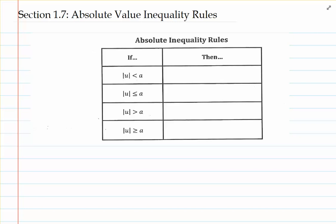If we look at the first row, this is saying that the absolute value of u is less than a. The second row would be read as the absolute value of u is less than or equal to a.